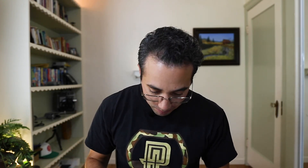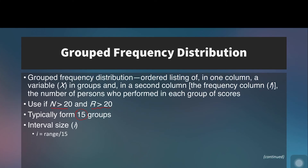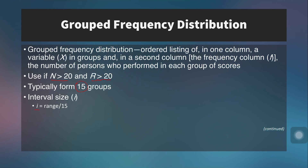We also have a grouped frequency distribution. Instead of a single score per row, we have a group of scores per row — for example, 15 to 20 pull-ups, 10 to 14 pull-ups, 5 to 9 pull-ups — and we tally the number of scores in each group. We typically use this when the sample is greater than 20 and the range is also greater than 20. We typically want to form around 15 groups, and interval size, denoted by i, is calculated by dividing the range by 15, or by 10 if you want 10 groups.